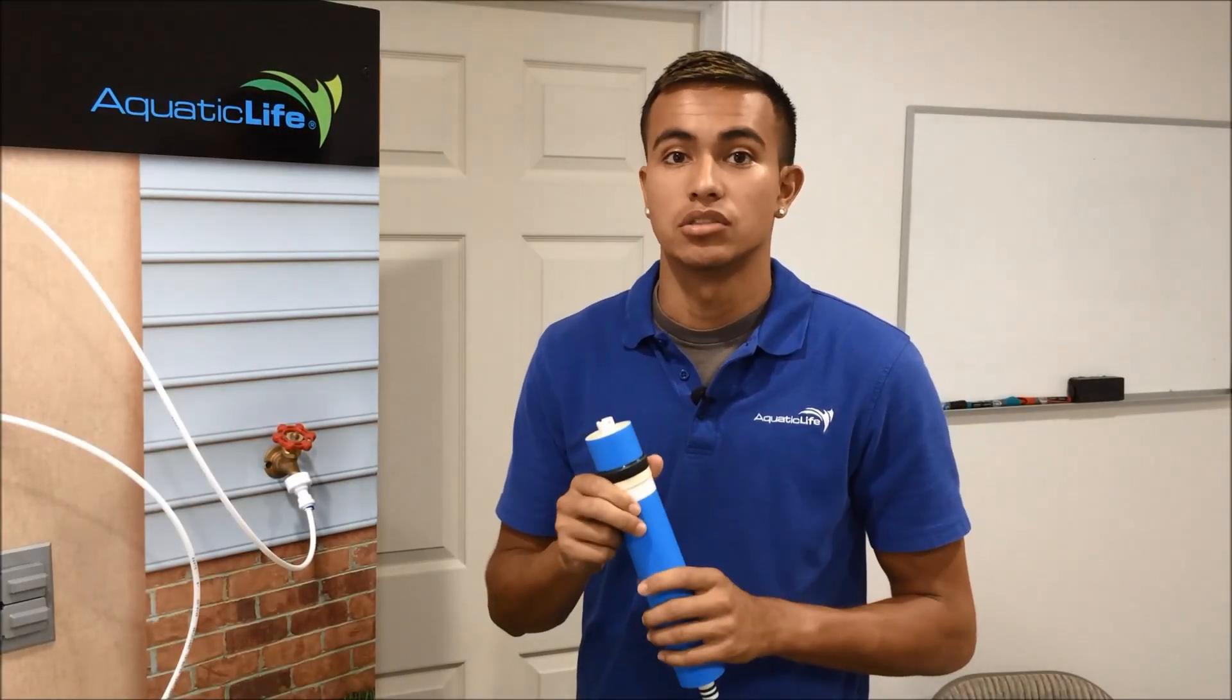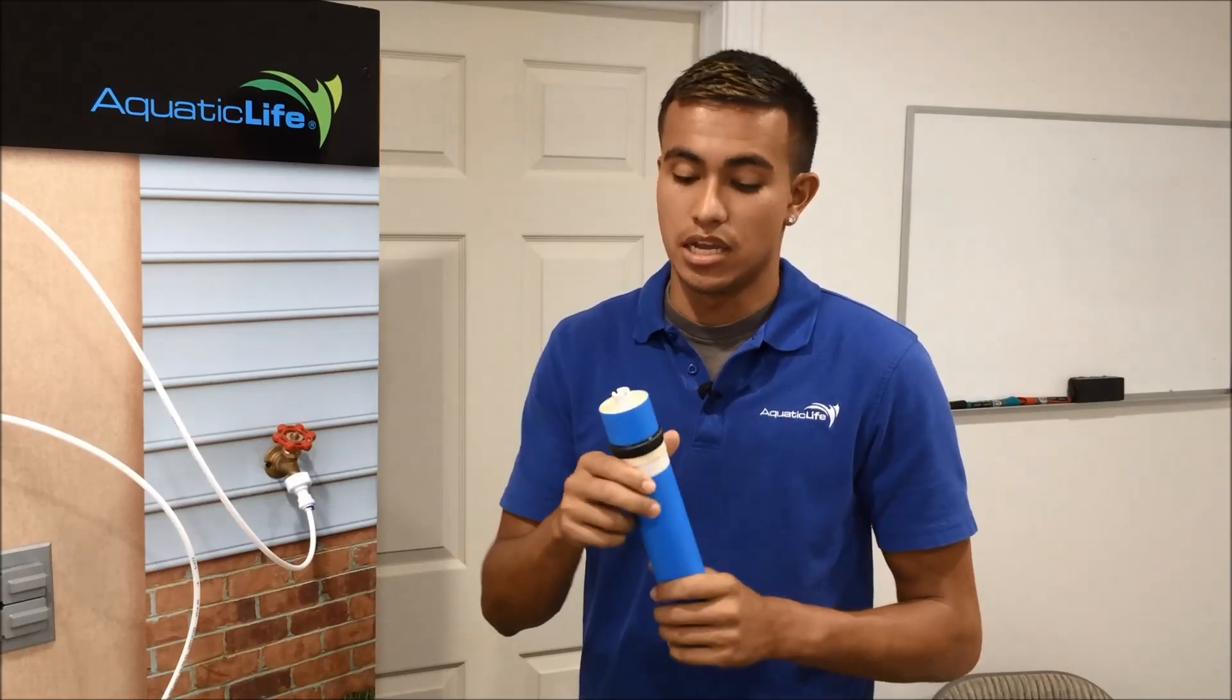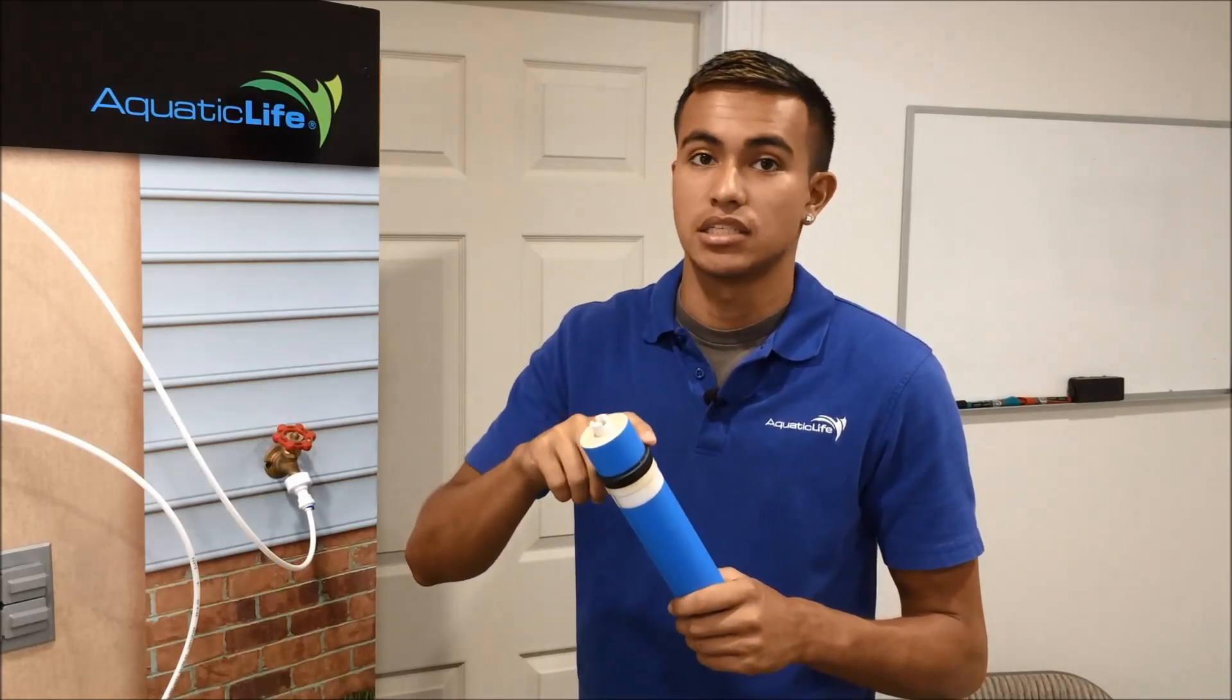We're just about ready to install the membrane. Once you've installed the membrane, it's important that you flush the membrane because it is packed with preservatives, and you'll want to install the membrane with this black gasket towards the top.